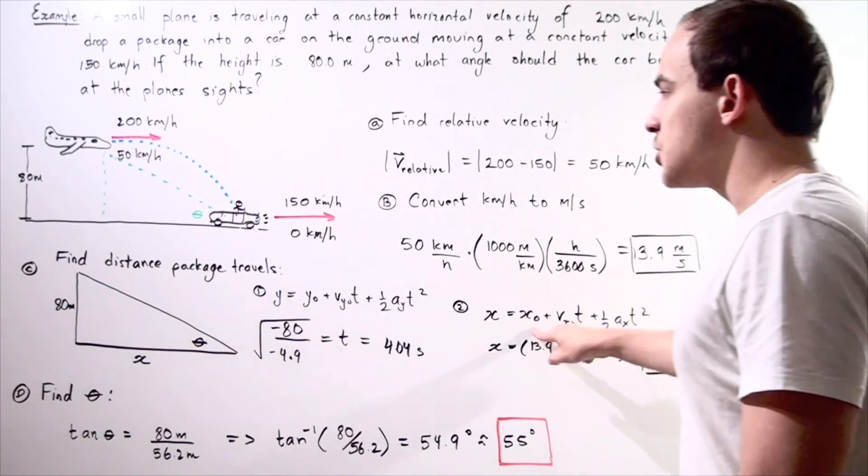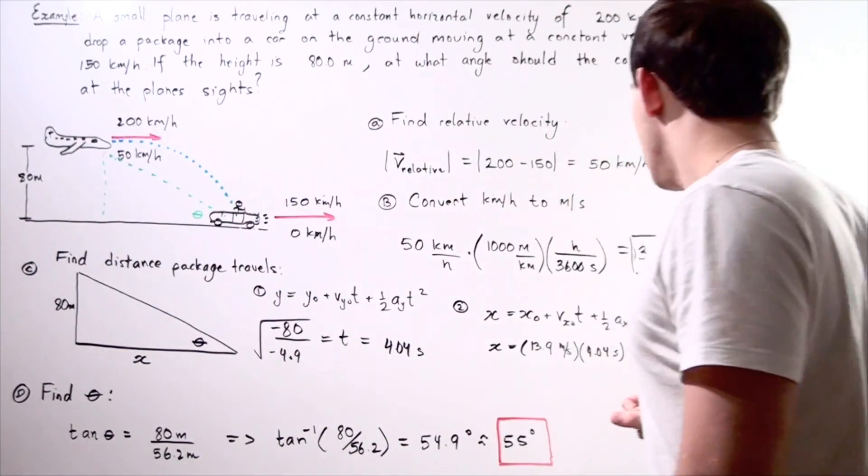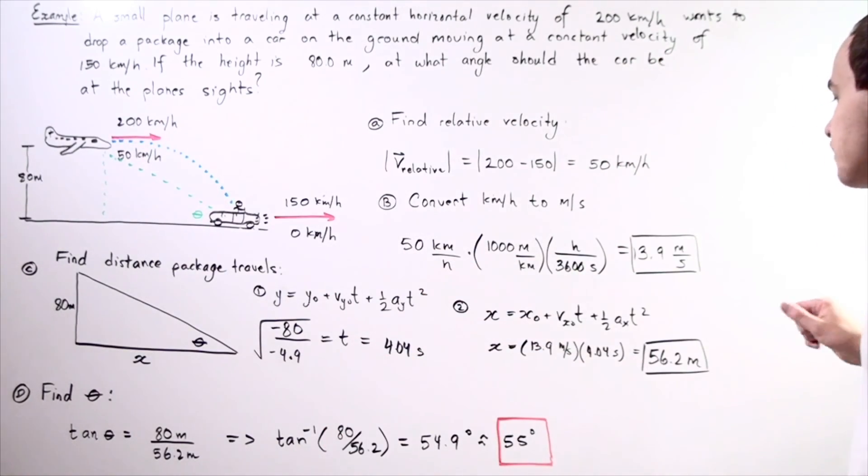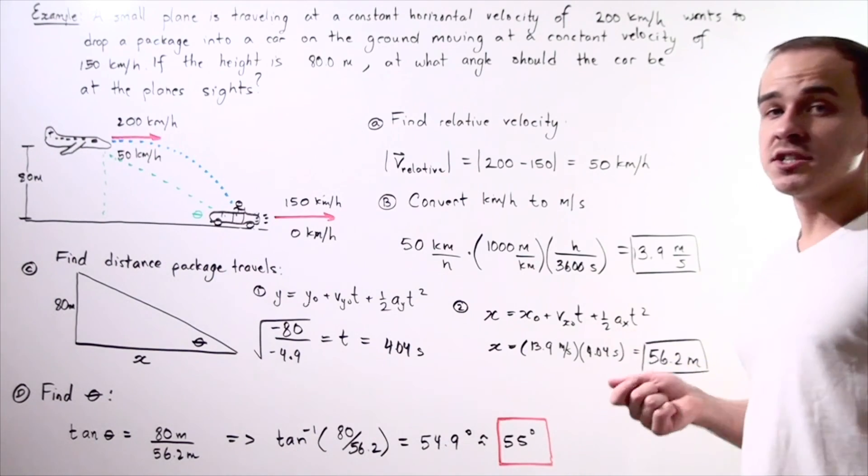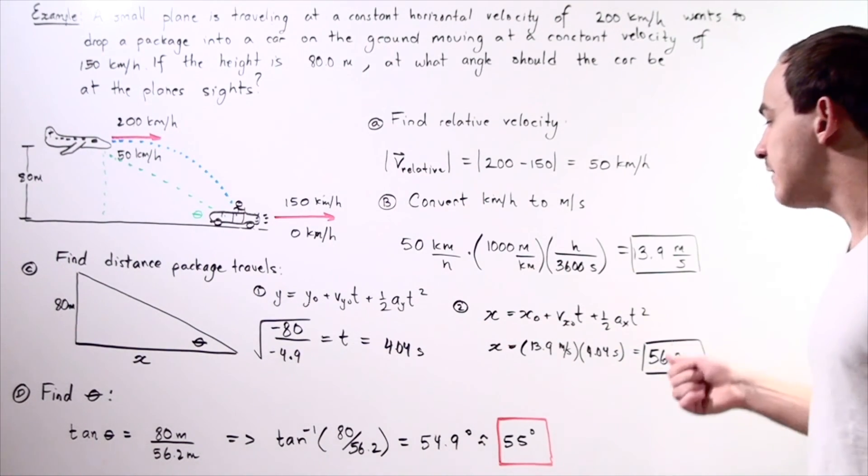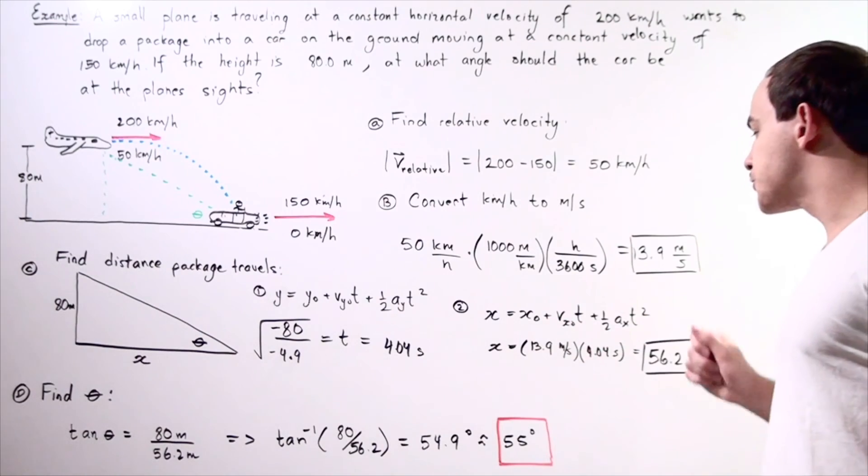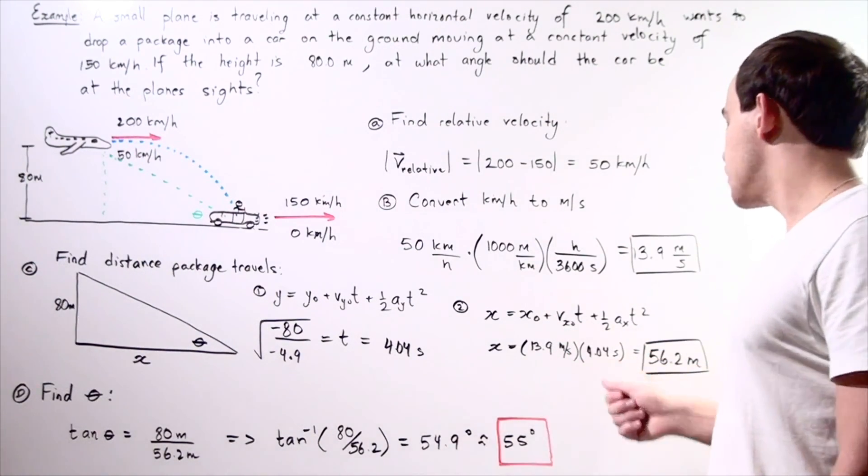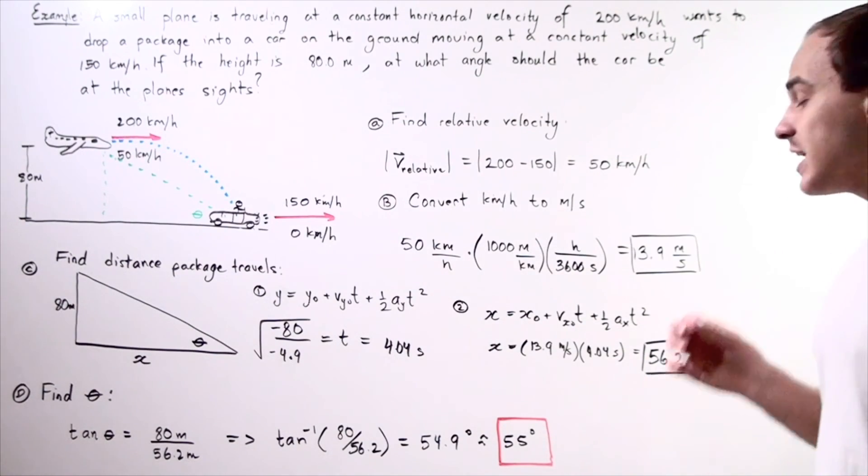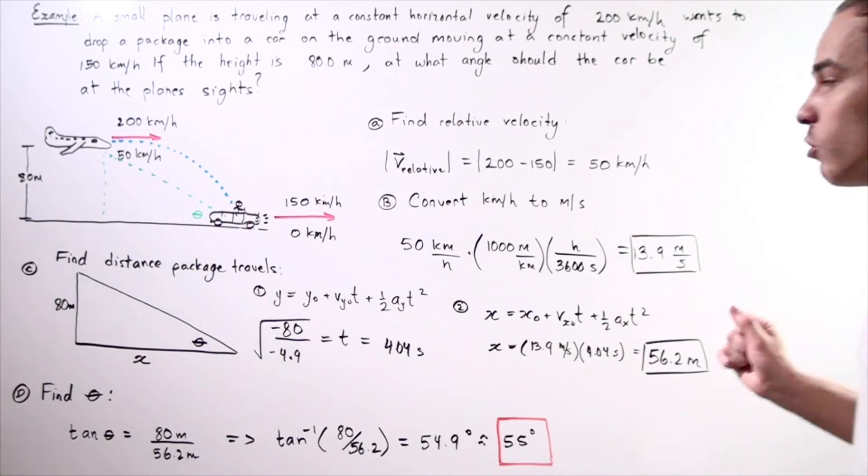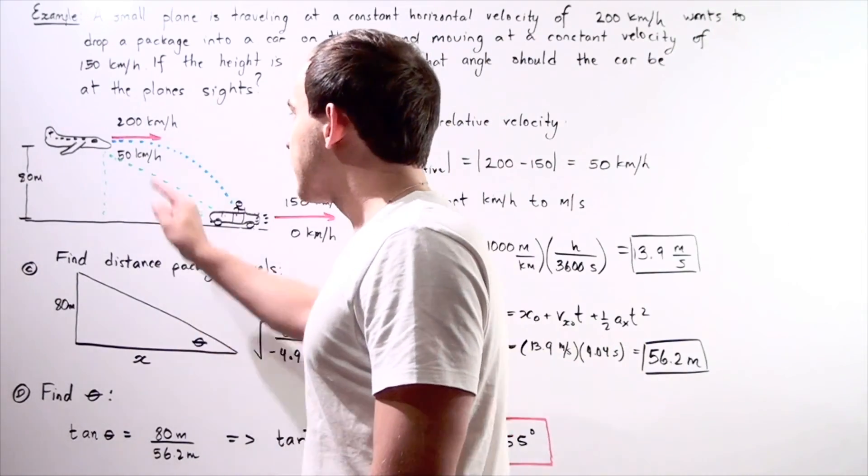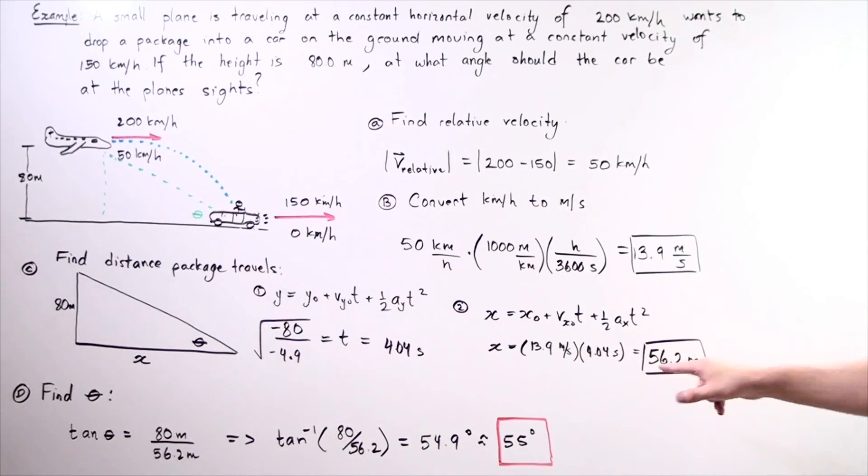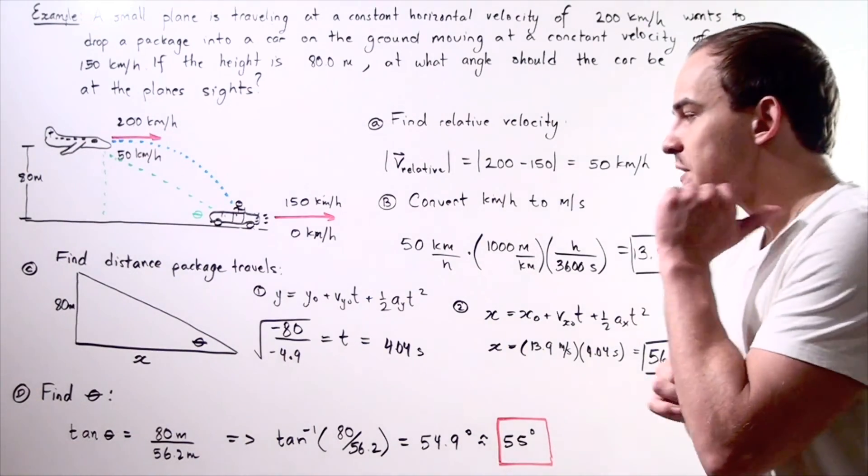Notice that our x initial, we assume it to be 0. Our x final is what we want to find, our final position along the x-axis. Notice that our acceleration along the x-axis is 0. So we are left with x equals this term. So 13.9 meters per second multiplied by 4.04 seconds gives us approximately 56.2 meters. So our distance that our object travels along the x-axis is equivalent to 56.2 meters. And now finally,